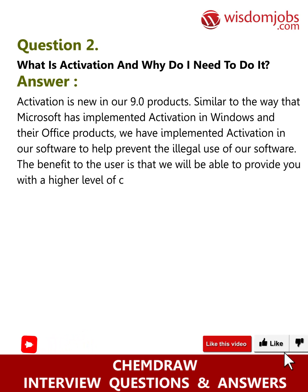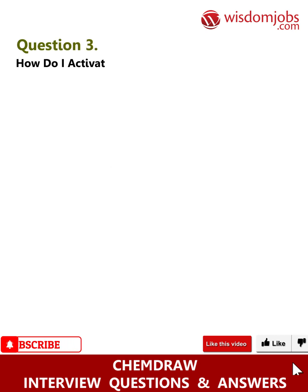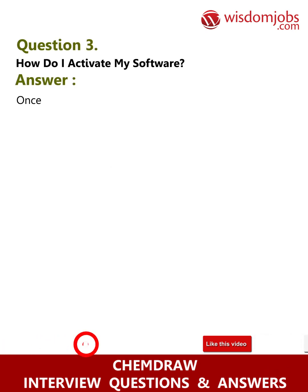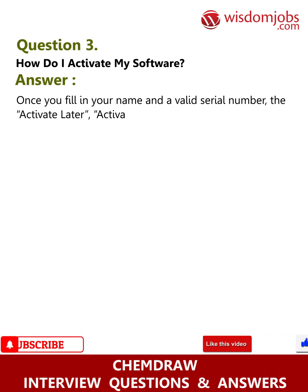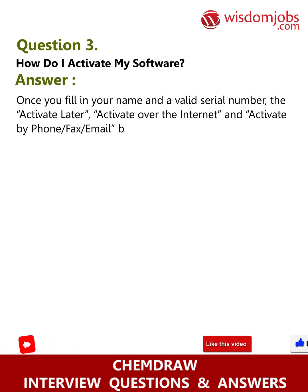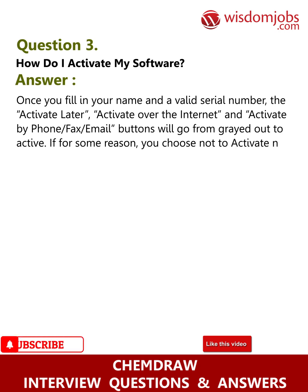Question 3: How do I activate my software? Answer: Once you fill in your name and a valid serial number, the Activate Later, Activate Over the Internet, and Activate by Phone/Fax/Email buttons will go from grayed out to active.